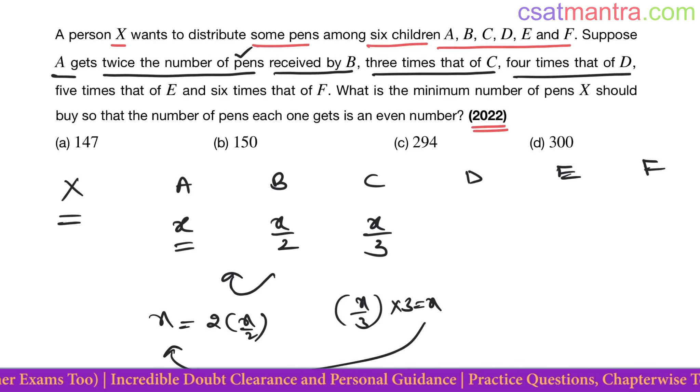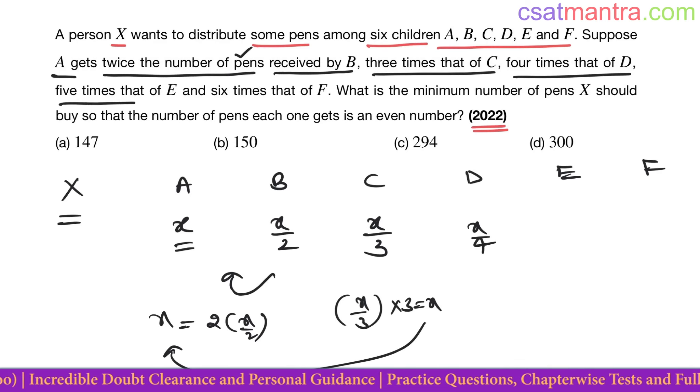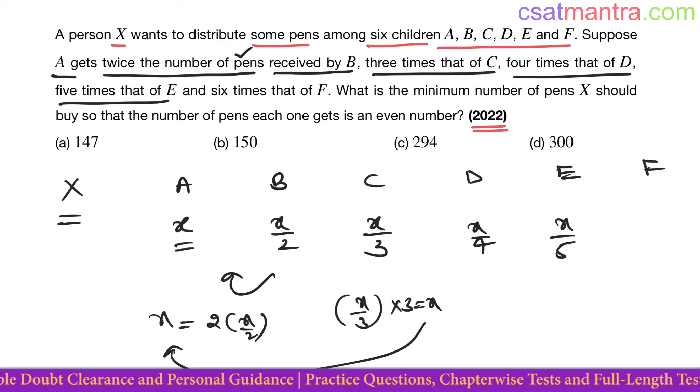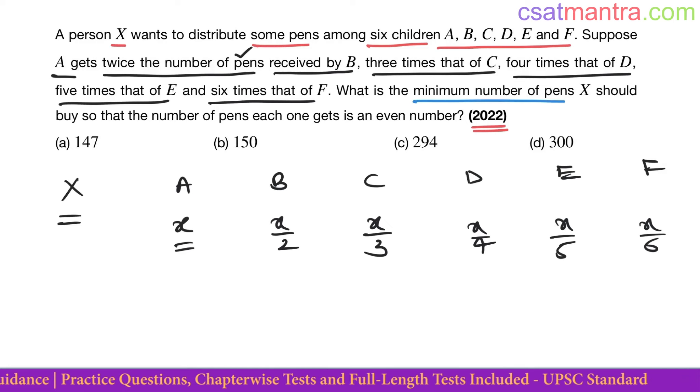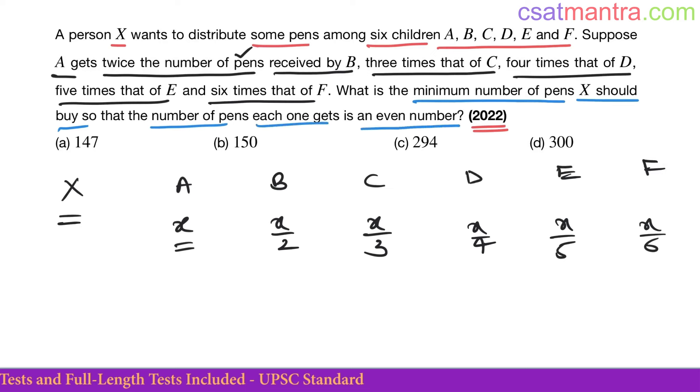Four times that of D, X by 4. Five times that of E, X by 5. Six times that of F, X by 6. Now, what is the minimum number of pens X should buy? So that number of pens each one gets is an even number. See, X is the number of pens A has. What is the number of pens X has?